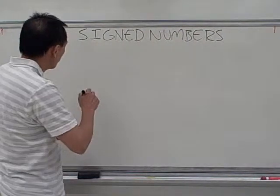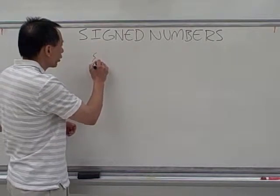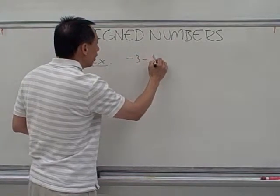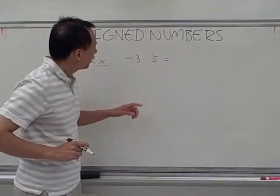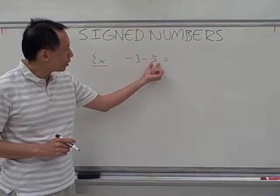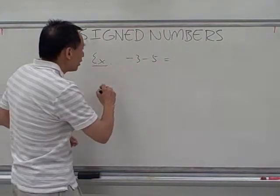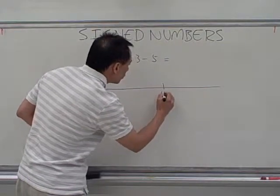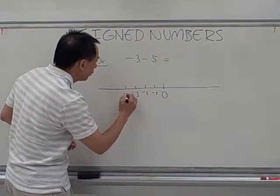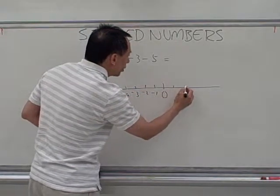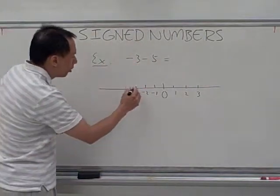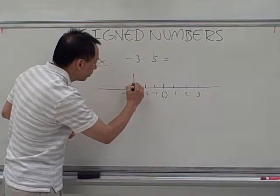Our next example is about subtraction. Let's do a negative 3 minus 5. So we start with a number that's negative. We're going to subtract that by a positive number 5. Real number line again. Center zero, negative 1, negative 2, negative 3, negative 4, and then we have the positives on the other side. The first number should be marked on the number line. This is our starting position.